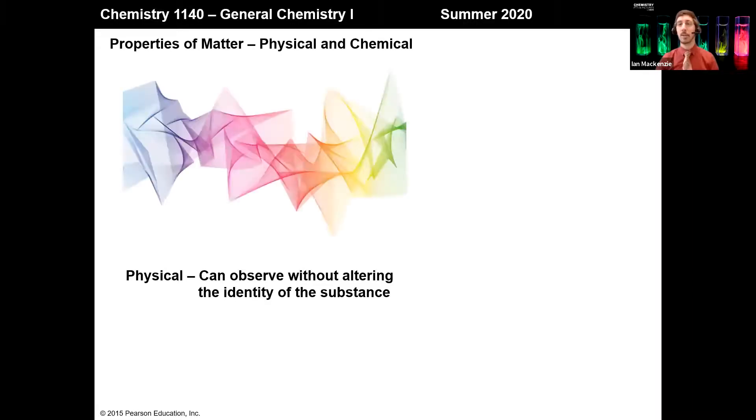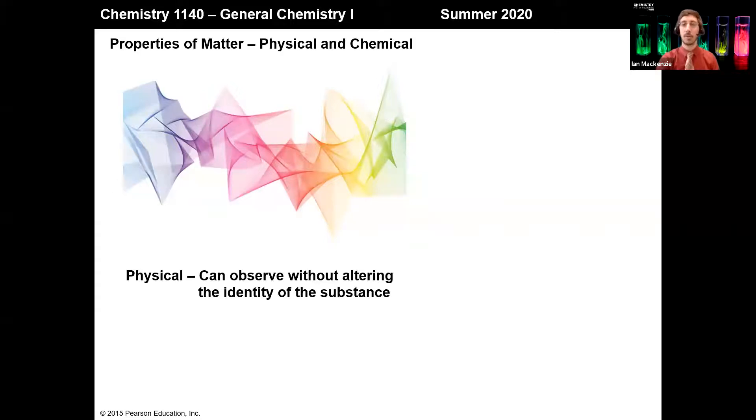So what do we mean exactly by the properties of matter? Let's take a look at the physical properties. These are ones that we can observe without altering the identity of the substance itself. The matter doesn't change - we can observe it without changing the matter itself. Those would be things like color, temperature, the melting point or freezing point (well, those are the same), and the boiling point as well. Those are all physical properties where we could measure them without changing the fundamental identity of the matter itself.